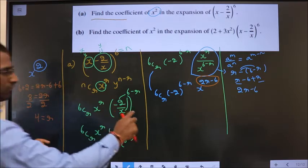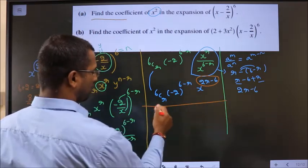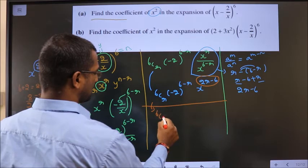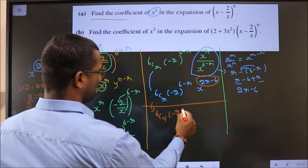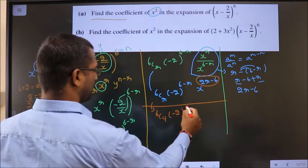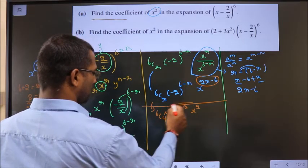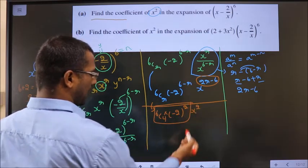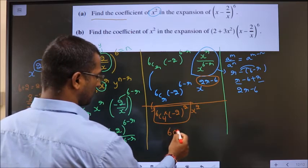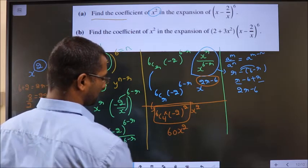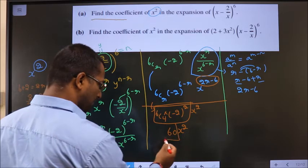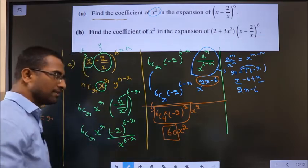Replace r equal to 4 in this. So, what do we get? 6C4 minus 2 power 6 minus 4 is 2, and x power 2 we get. Put this at once in the calculator. You get the answer to be 60x square. So, coefficient of x square is 60. That is our answer.